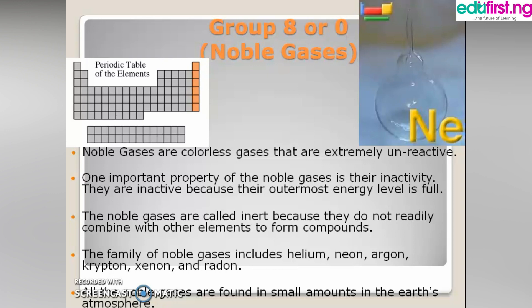The family members of noble gases include helium, neon, argon, krypton, xenon, and radon. All noble gases are found in small amounts, meaning they are very rare — that is why they are also called rare gases.